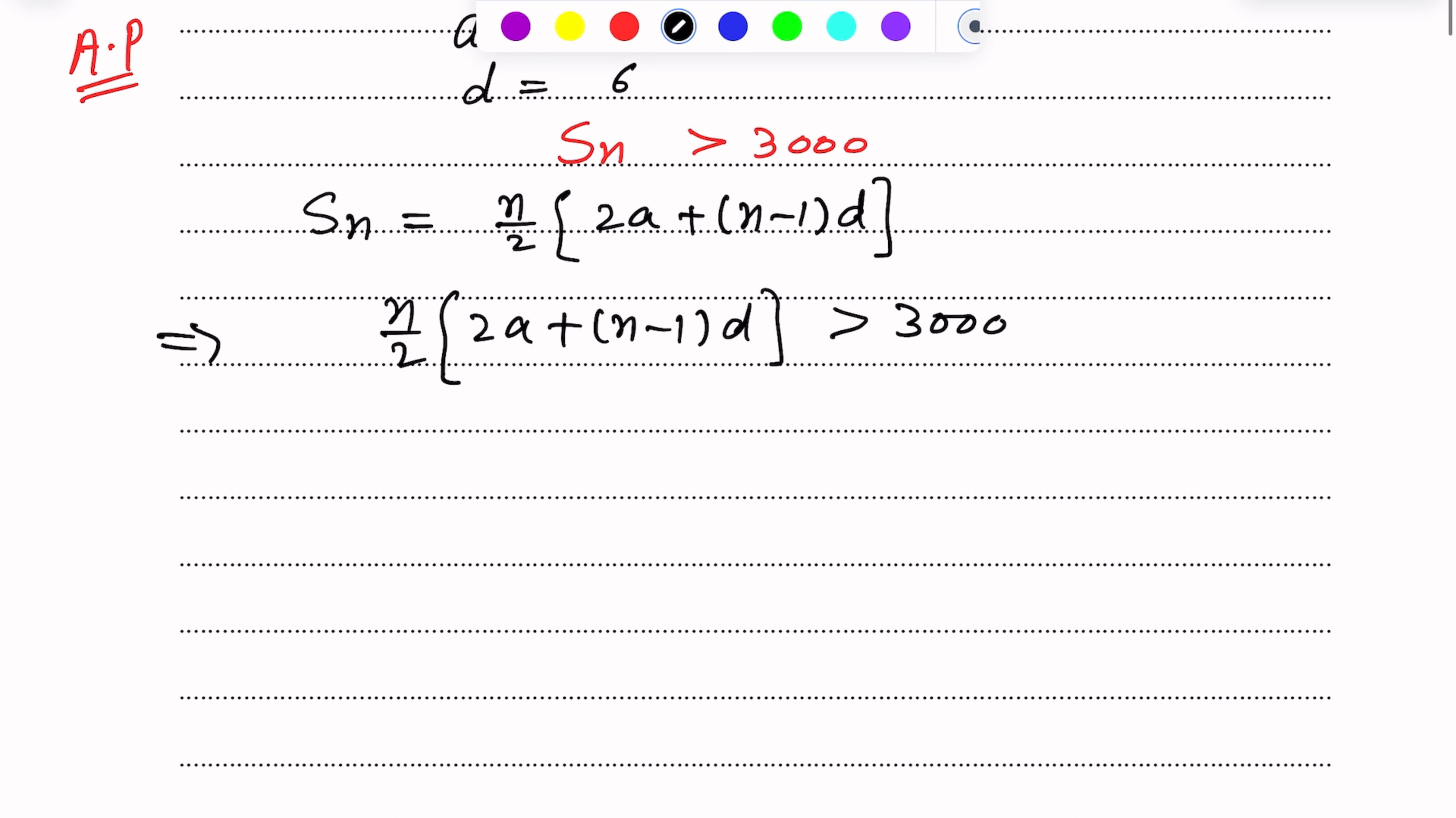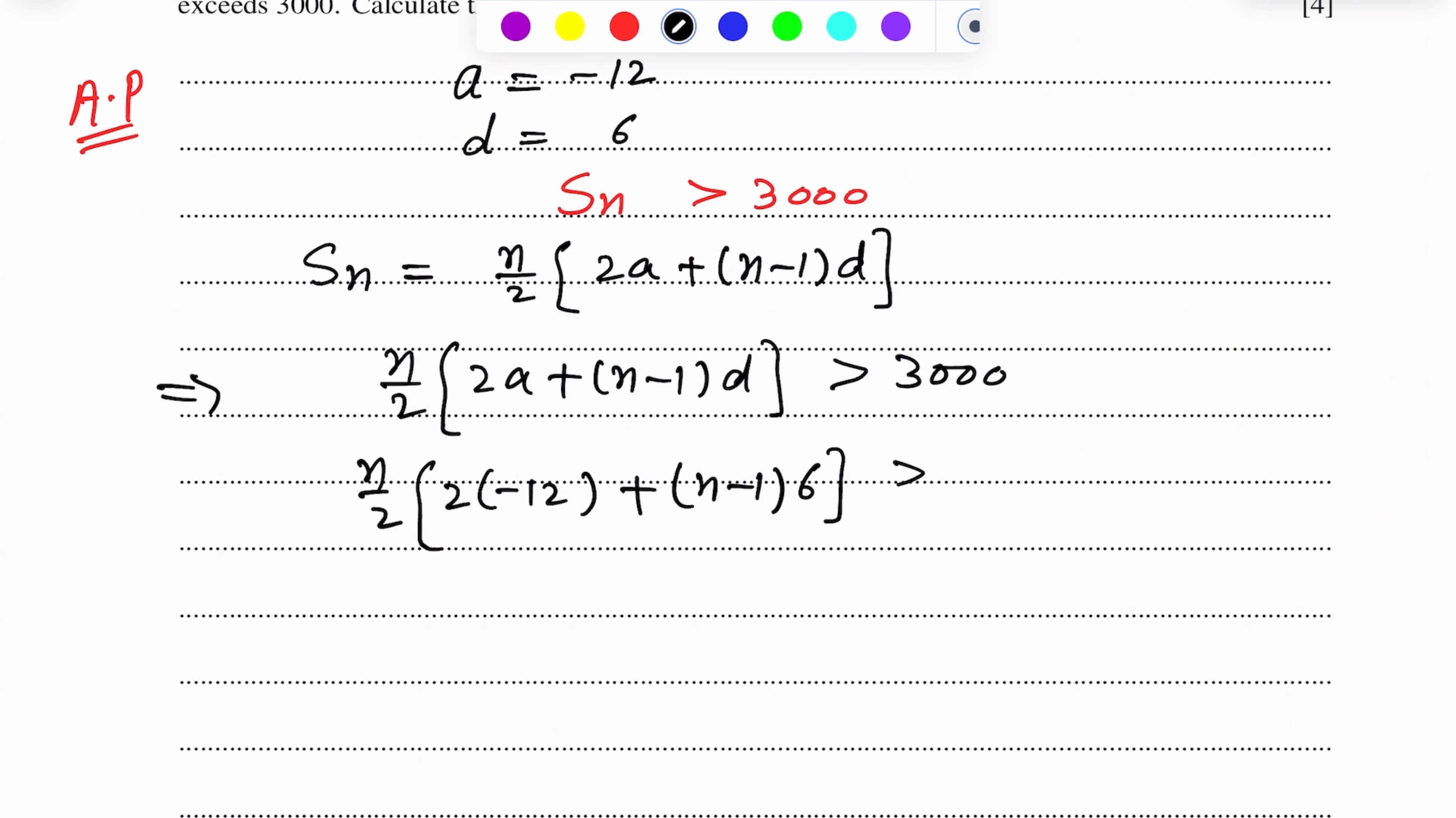N over 2 into A. A is minus 12, plus n minus 1 into D, D is 6.